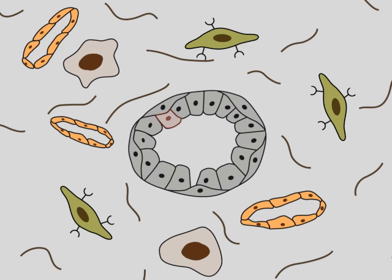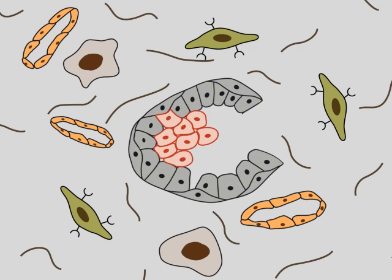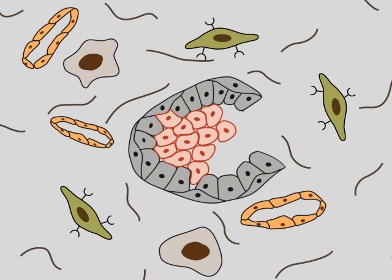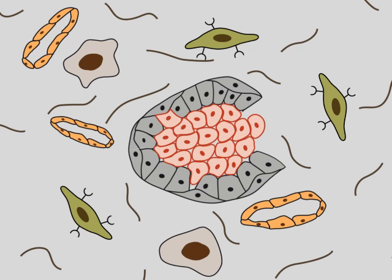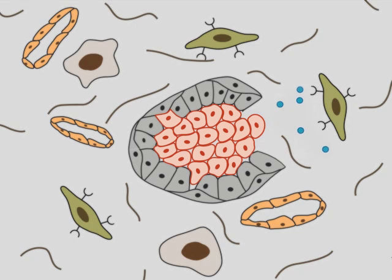After the malignant transformation of an epithelial cell, the carcinoma cells spread within the glandular lumen. The tumor cells then penetrate the normal epithelium and make contact with the surrounding microenvironment. Tumor cells produce cytokines and growth factors, which affect the cells of the microenvironment.